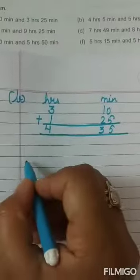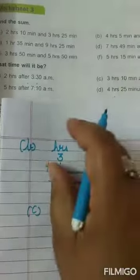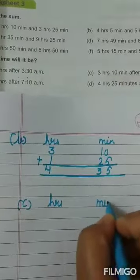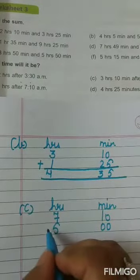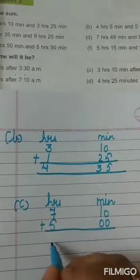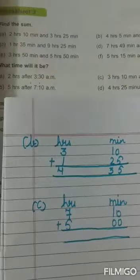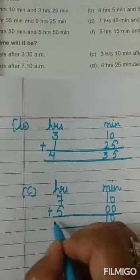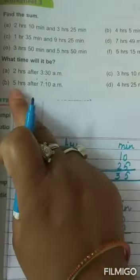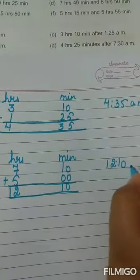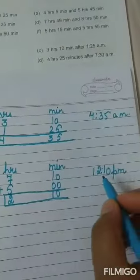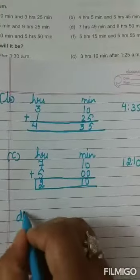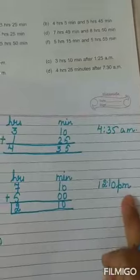Next is C part: 5 hours after 7:10 A.M. Hours और minutes लिखे: 7 hours 10 minutes, plus 5 hours 0 minutes. 0 plus 0 is 0, 1 plus 0 is 1, 7 plus 5 is 12. अब ध्यान से देखना — सुबह के 7:10 थे, और 5 hours के बाद time आया 12:10। अब आपको पता है 12 बजे के बाद PM शुरू हो जाता है, तो A.M. convert हो गया PM में, क्योंकि time हो गया 12:10। After 12, what happens? PM.